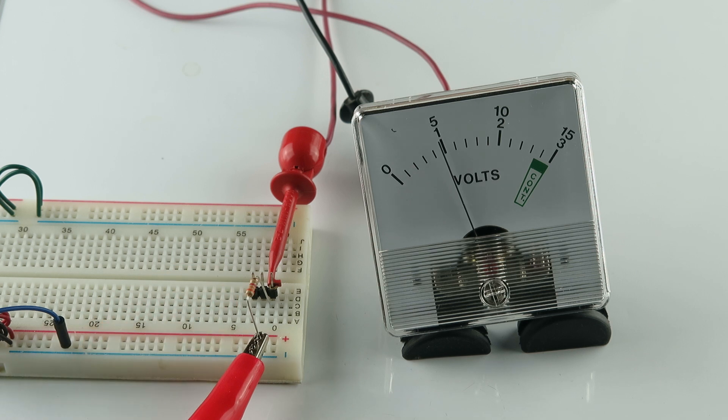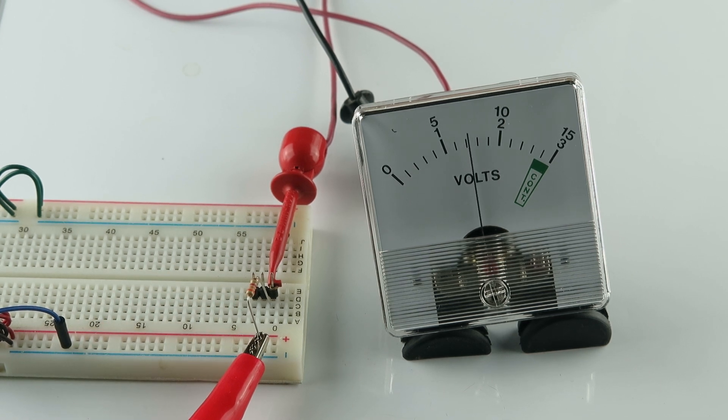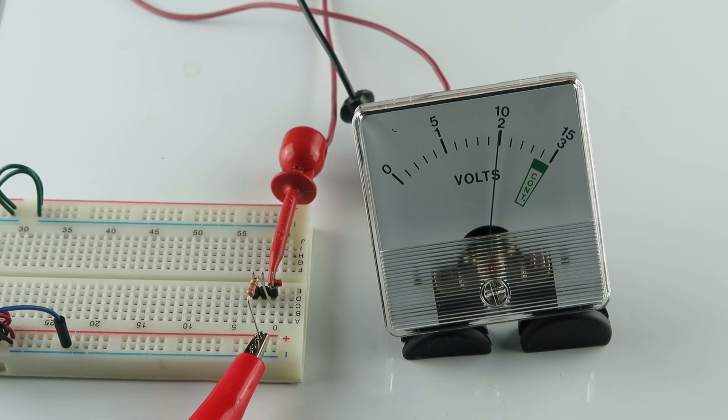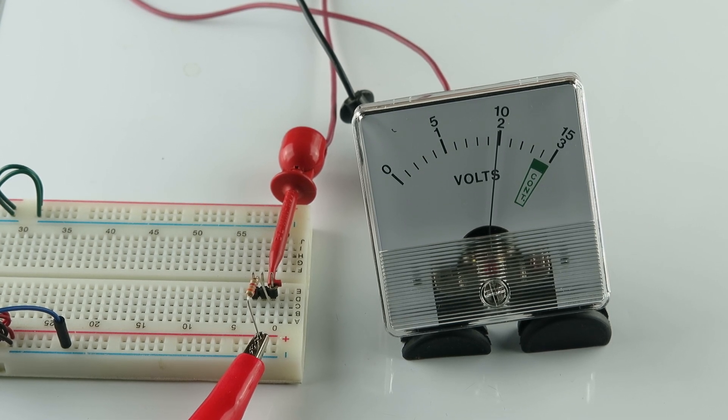This is 3.3K. Couldn't find a 3,000. Is this right in here? It's just a hair under. That looks like a hair under too.